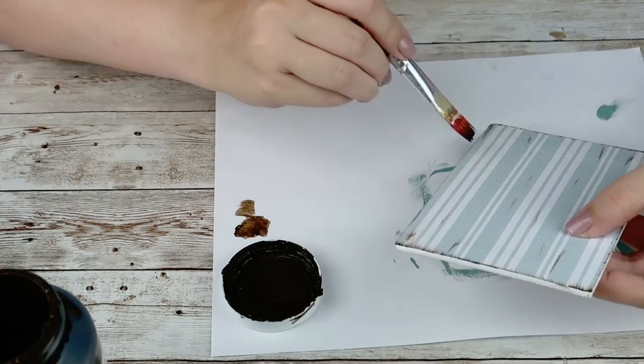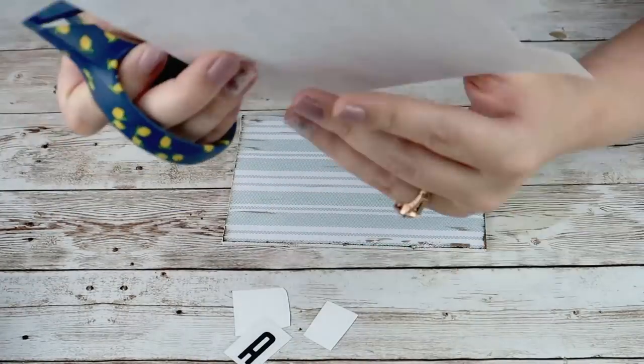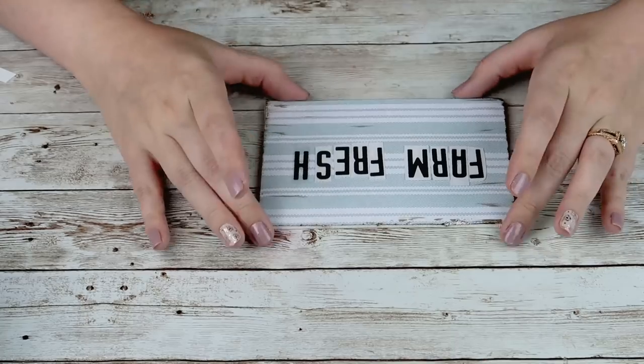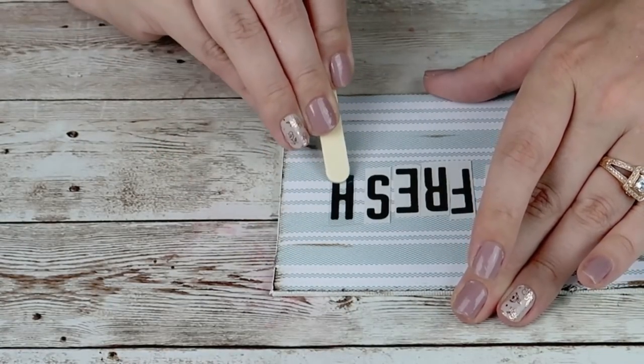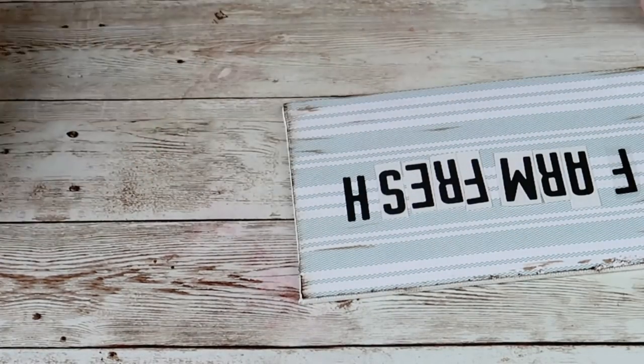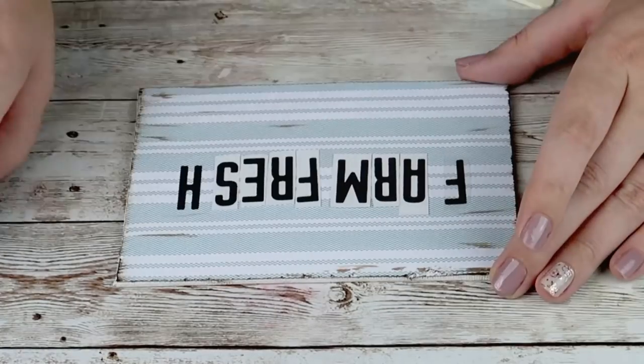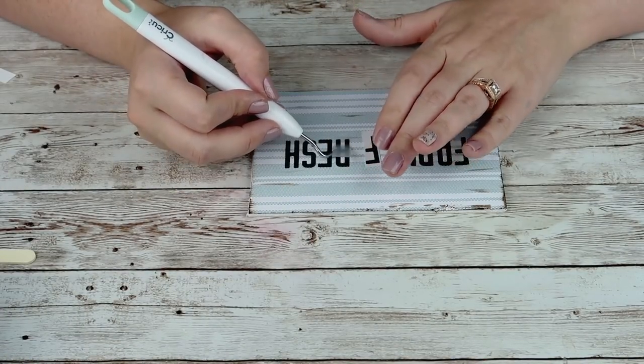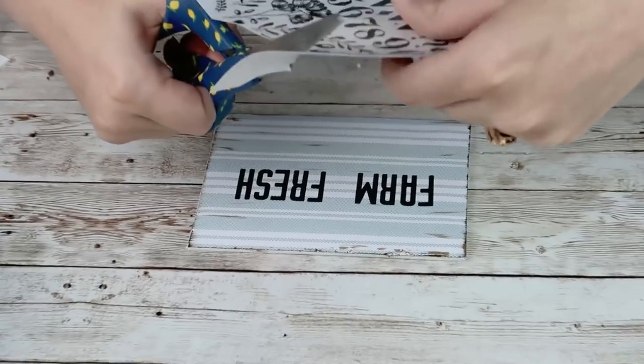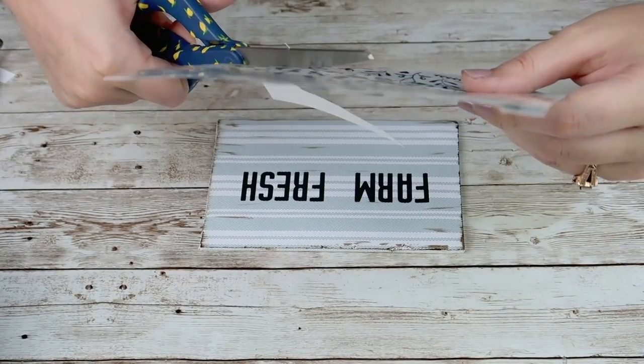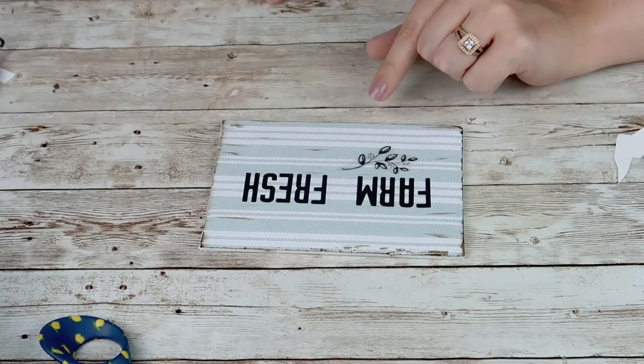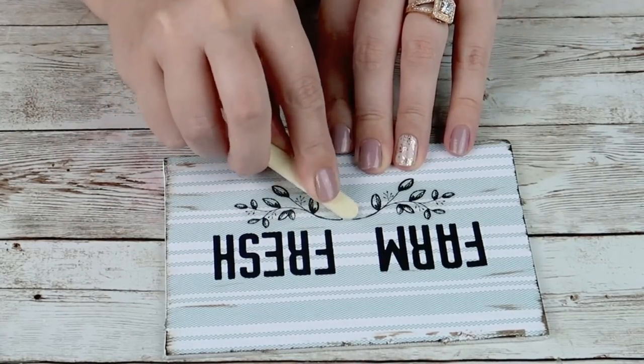Once that is all dry I'm going to take these rub-on transfers that you can get from the Dollar Tree, just these letters. I'm going to cut out the letters to spell farm fresh and start at the end of each word and the beginning of another. You can see what I'm doing here, lining these up as best as I possibly can. Using a popsicle stick I'm rubbing the letter down and then removing the clear plastic from the top. Then I grabbed some more rub-on transfers with these viney ones that I thought were really pretty. I'm going to put those down right below my words, rub those down, and remove the plastic from the top as well.